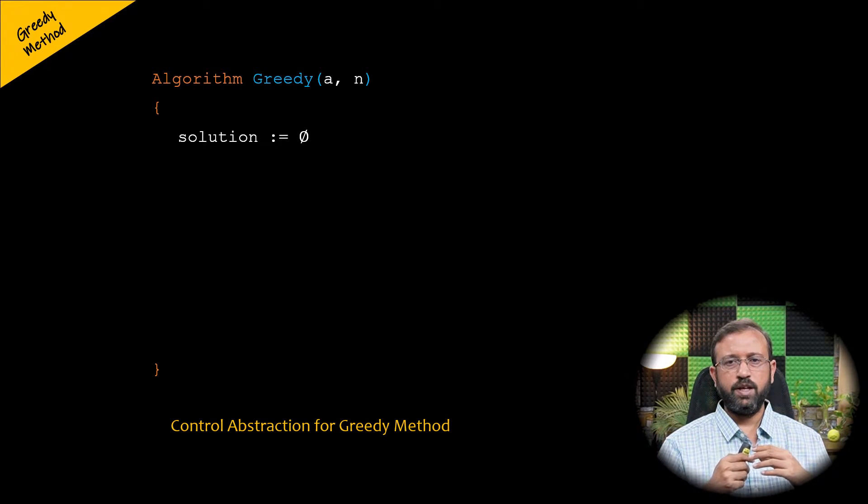Then we need to look at each input in array a. So we will have a for loop from i equals 1 to n because there are n inputs.